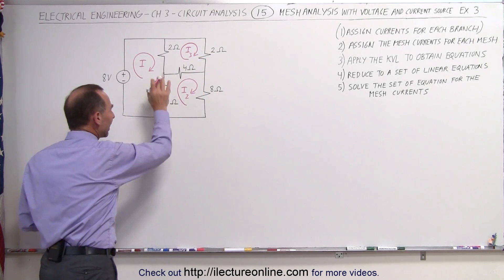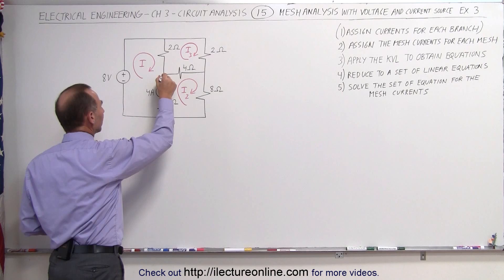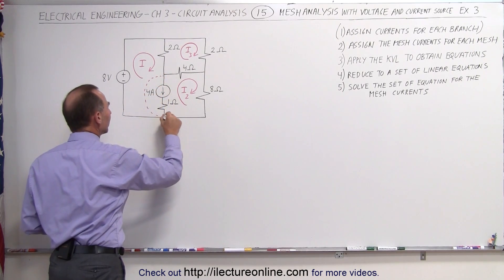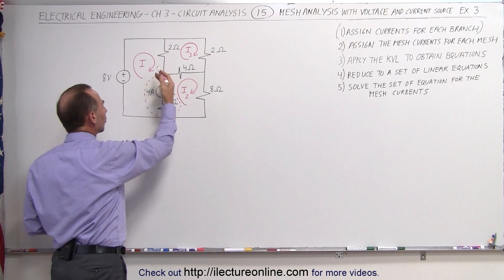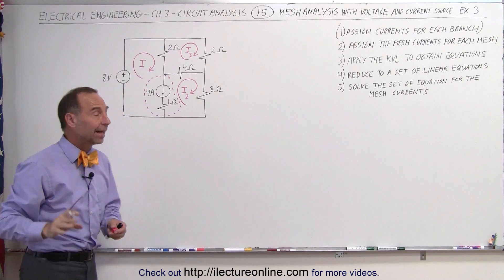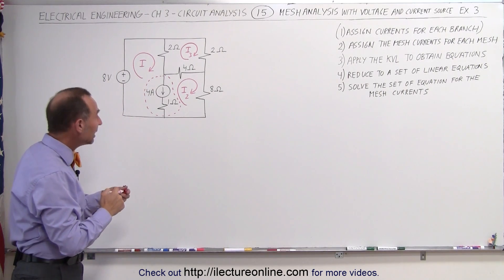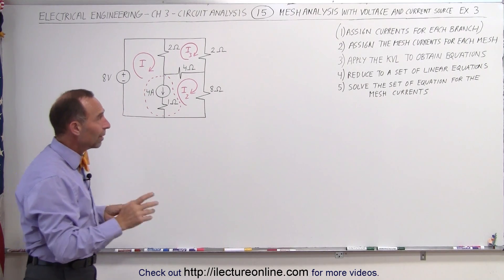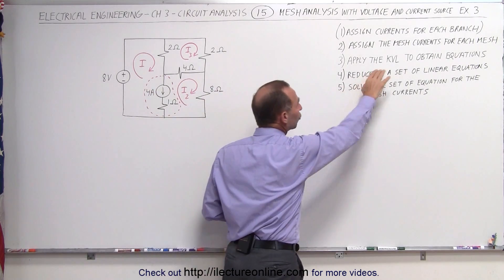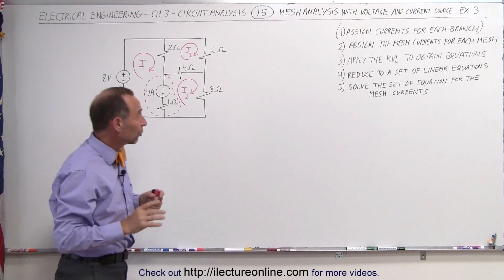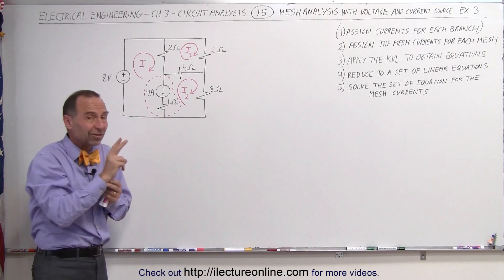Here we have on this branch a current source, so temporarily we're going to exclude this from the analysis. We're just simply going to take it out as if that is not there. What we need to do then is go to step three and apply the Kirchhoff voltage law to obtain equations. In this case, we're only going to be able to obtain two equations instead of three.